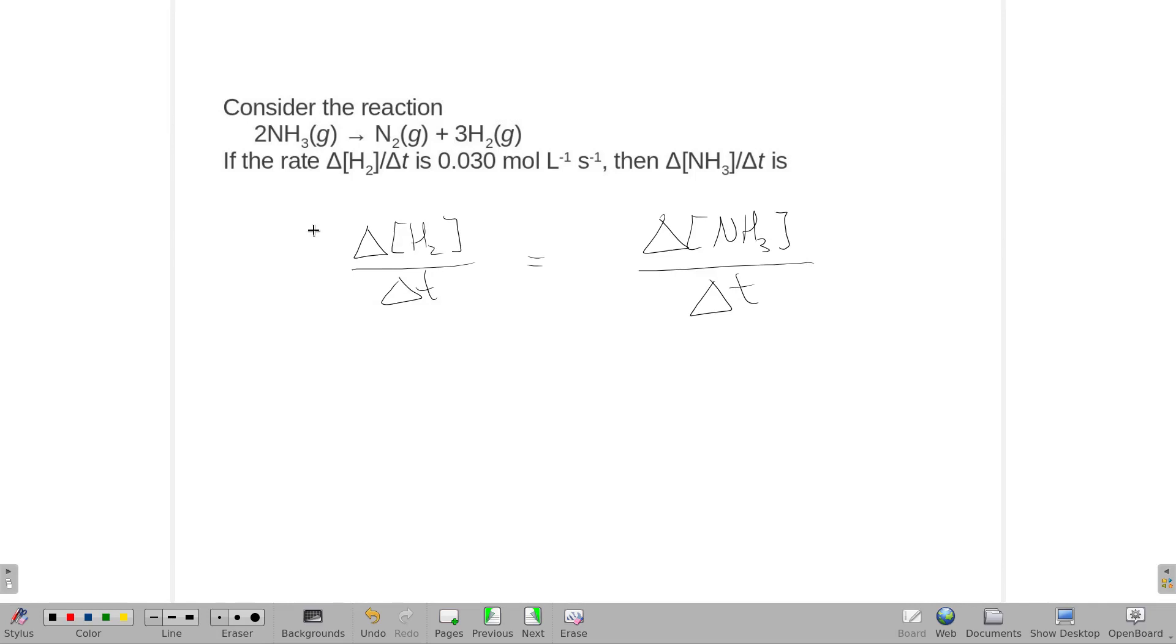And my balanced equation would mean I need to put a three in front of this and make them positive because they're products, and a two in front of this and make it negative because it's a reactant.